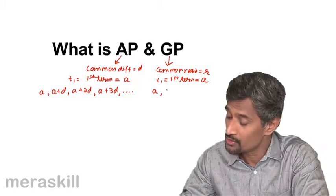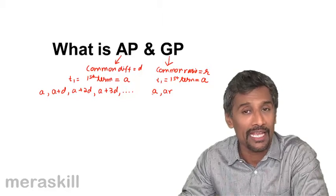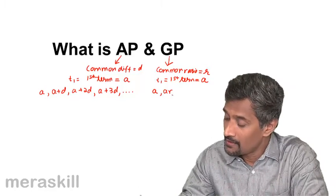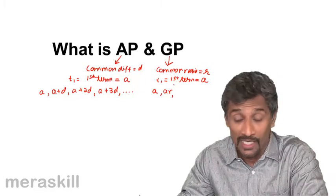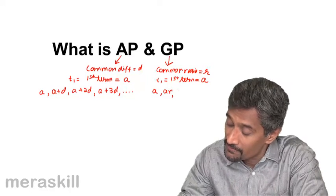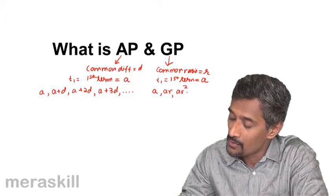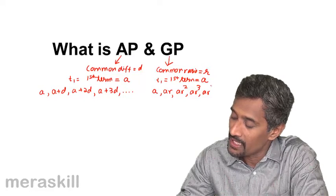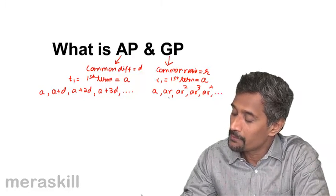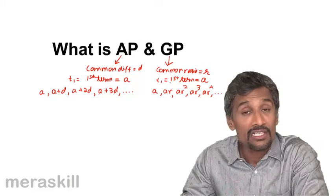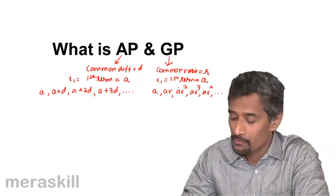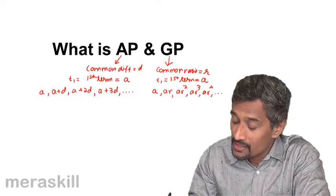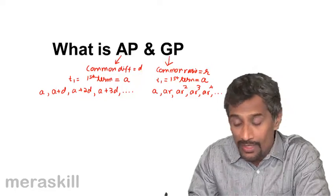In GP, the first term is a. Since there is a common ratio, the second term would be ar so that ar upon a is r. The third term is ar squared, the fourth term would be ar cubed, fifth term would be ar raised to 4. Each consecutive term is multiplied by the common ratio.